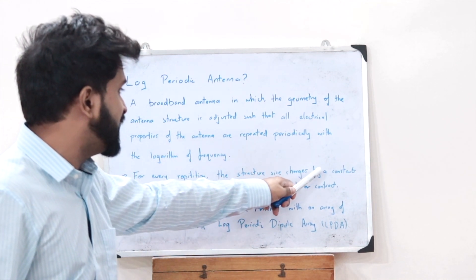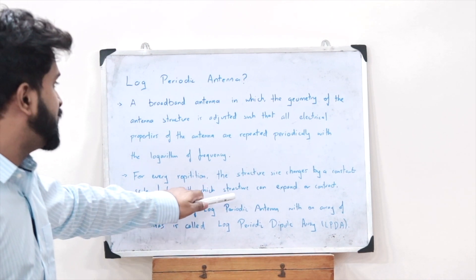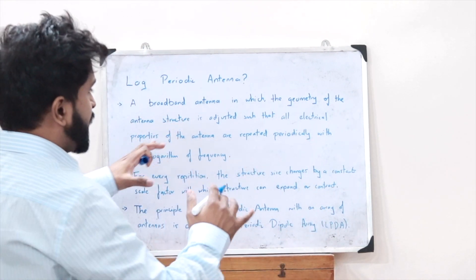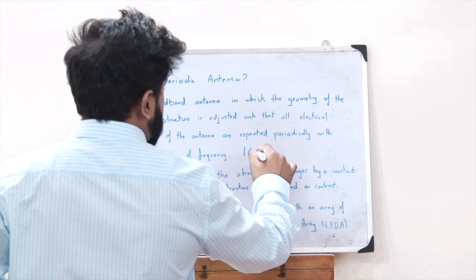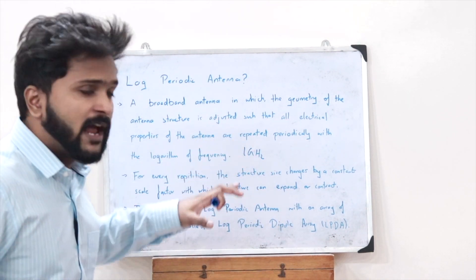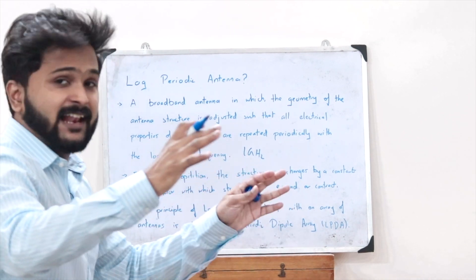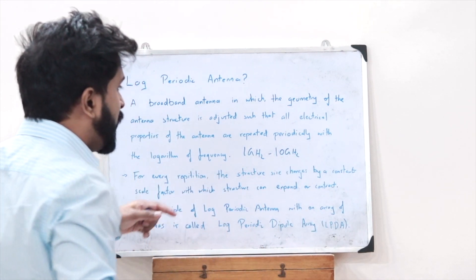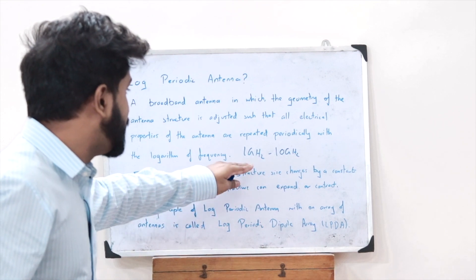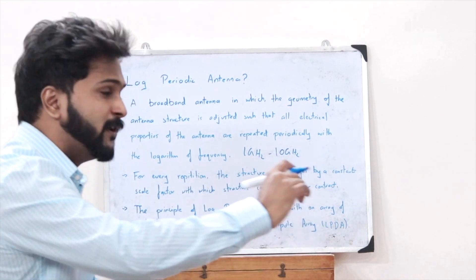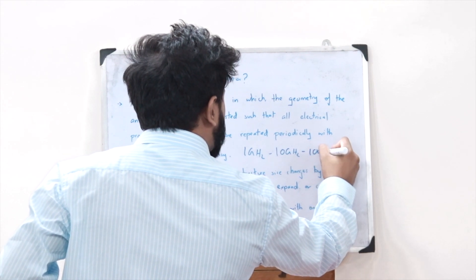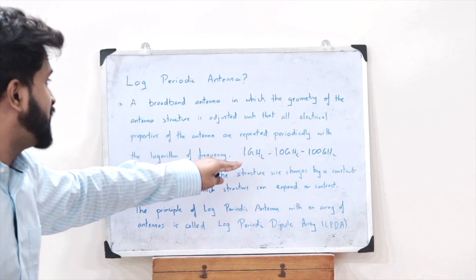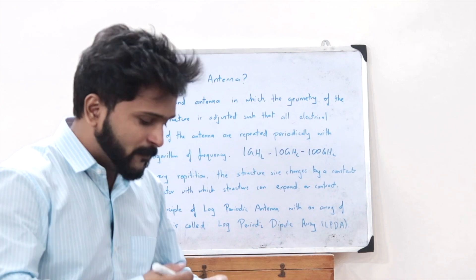For every repetition, the structure size changes by a constant scale factor. To simplify: if a particular antenna has certain electrical properties at 1 GHz, it will have the same properties at 10 GHz, and similarly at 100 GHz. The electrical properties remain the same as a function of the logarithm of the frequency.